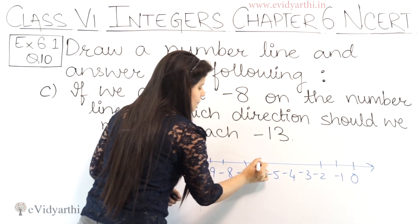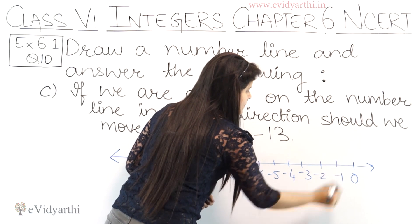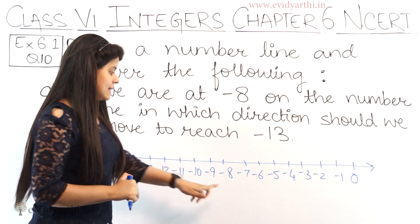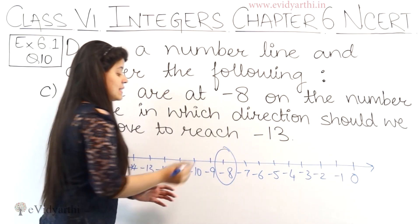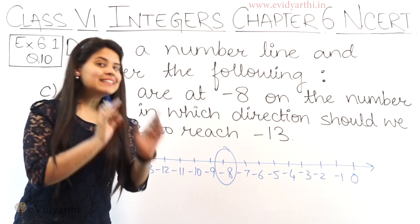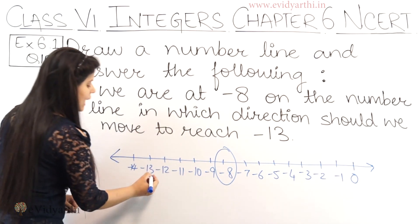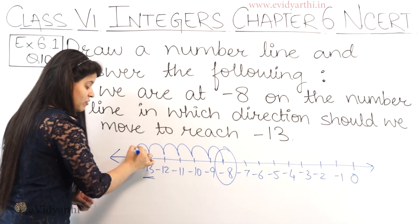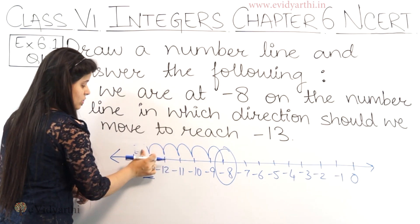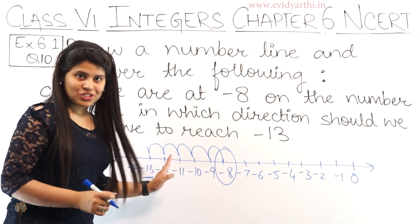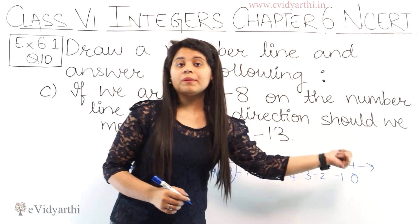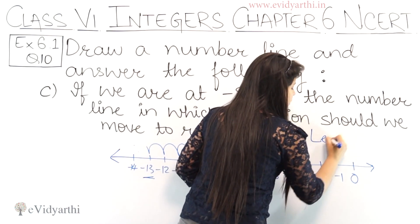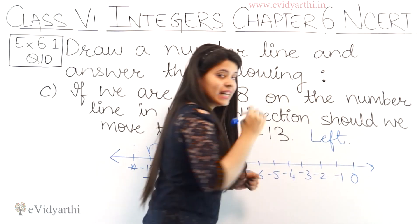Now let's come back to the question. If we are at minus 8 — so where is minus 8? It's right here. From minus 8, we have to go to minus 13, which is here. So in which direction are we moving? We are moving in the left direction. If we were moving this way it would be the right direction, but we are going left. So we have to move to the left direction.